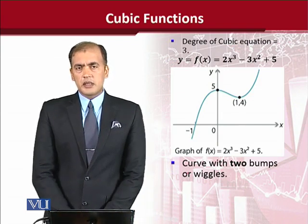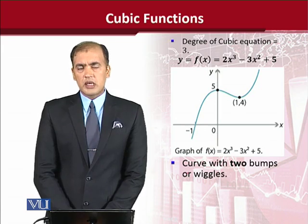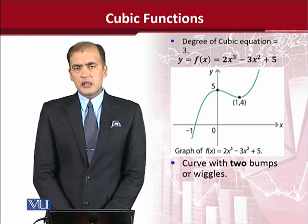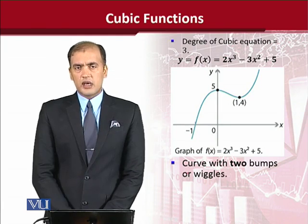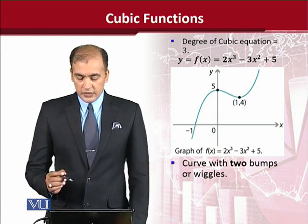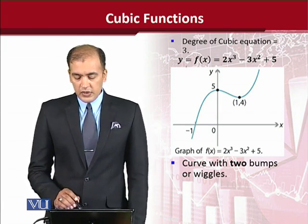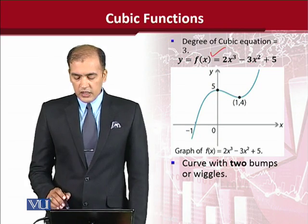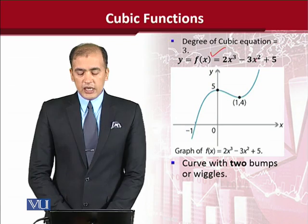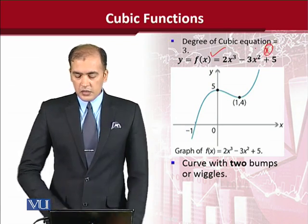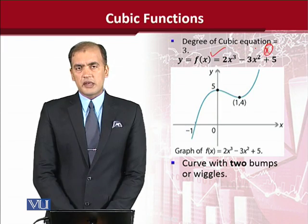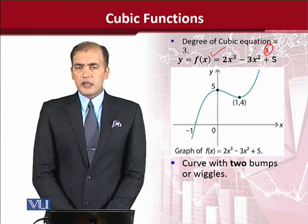Reminding ourselves of the requisite that a is non-zero, the degree of the cubic function is evidently three, as the highest power is three. Now let's talk about the diagram. We have taken the numeric example 2x³ − 3x² + 5. One observable thing is that the term in x is missing, but this does not make it some other type of function — it will remain a cubic function because the highest power is still 3.